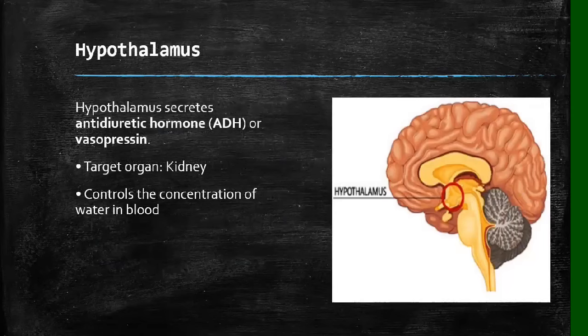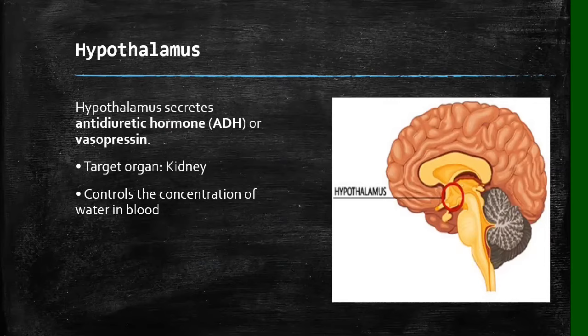Our first gland is the hypothalamus, which you can see highlighted with a red circle on the diagram. The hypothalamus secretes a hormone called the anti-diuretic hormone, abbreviated as ADH, which is also called vasopressin.